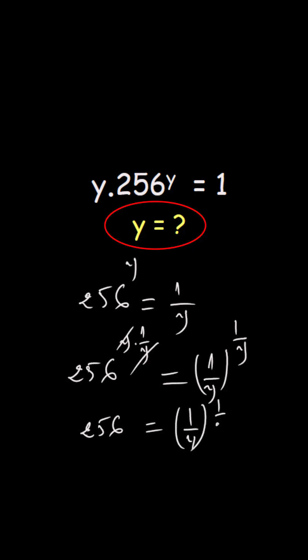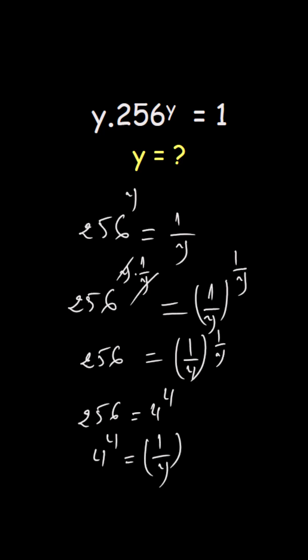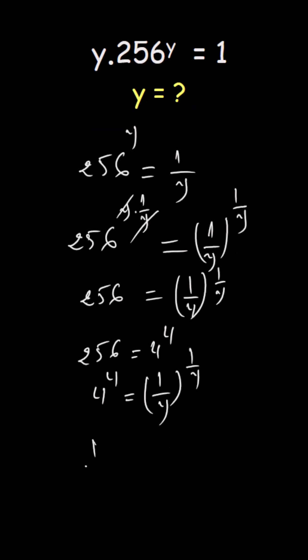I can write 256 as 4 to the power of 4. So my equation becomes 4 to the power of 4 equals 1 over y to the power of 1 over y. By identification, we find 1 over y equals 4, and the final answer is y equals 1 over 4.